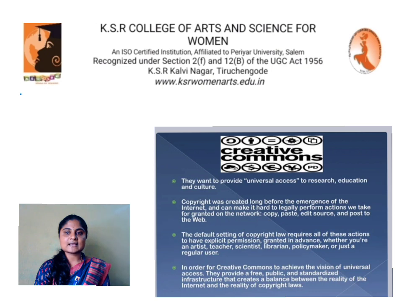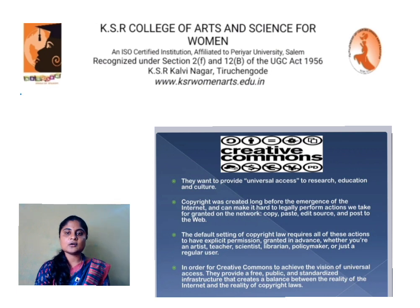They want to provide universal access to research, education, and culture. Copyright was created long before the emergence of the internet and can make it hard to legally perform actions we take for granted on the network — copy, paste, edit, source, and post to the web. The default setting of copyright law requires all of these actions to have explicit permission granted in advance, whether you are an artist, teacher, scientist, librarian, policymaker, or just a regular user. In order for Creative Commons to achieve the vision of universal access, they provide a free, public, and standardized infrastructure that creates a balance between the reality of the internet and the reality of copyright laws.